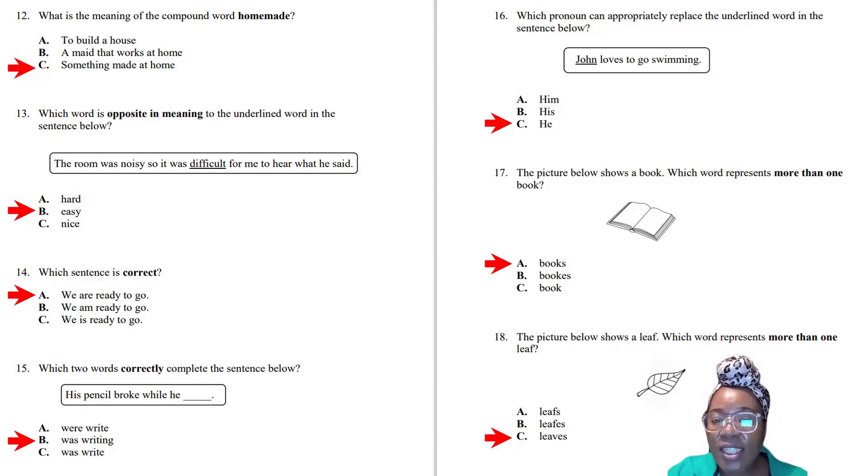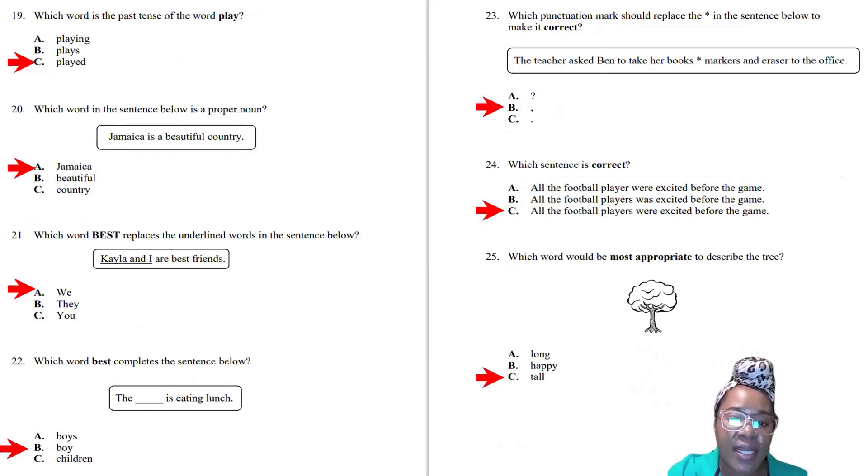Question seventeen: The picture below shows a book. Which word represents more than one book? This is singular and plural. One book, two books, you add an S. Question eighteen: The picture shows a leaf. Which word represents more than one leaf? Leaves. Take off the F and add V-E-S. Baby: one baby, two babies, B-A-B-I-E-S, and there are many other words like that.